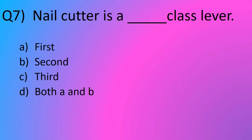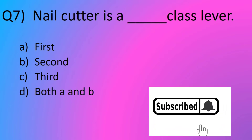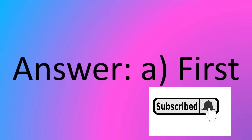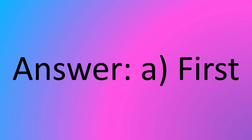Question number 7. Nail cutter is a blank class lever. Option A, first. Option B, second. Option C, third. Option D, both A and B. The answer is option A, first.